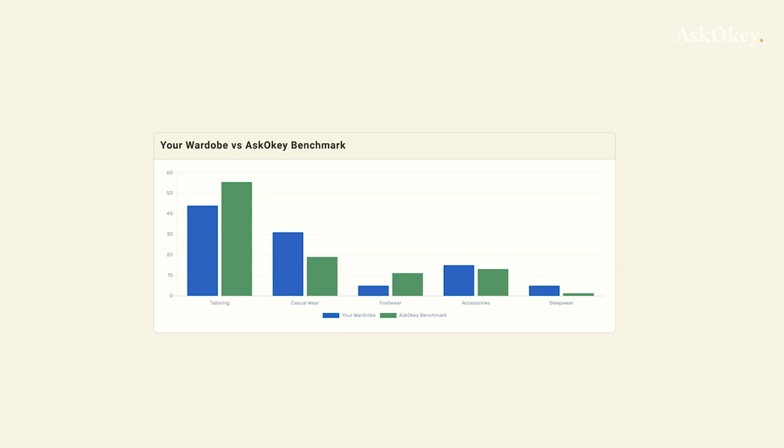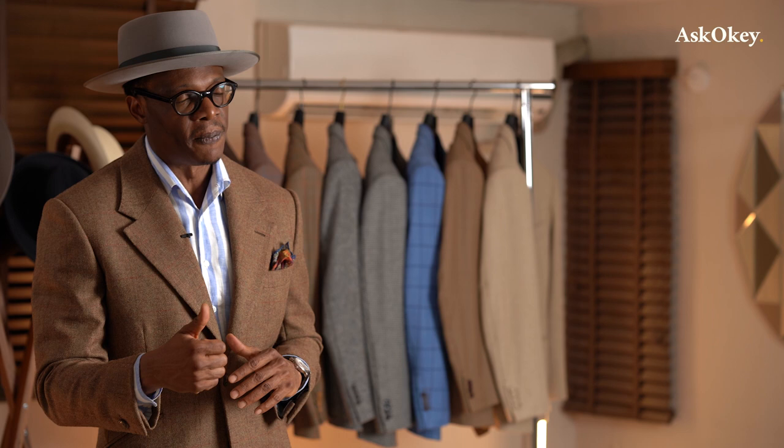For instance, for shoes or footwear I've allocated approximately 20%, for tailored clothing there's a certain percentage, for casual clothing a certain percentage, for accessories a certain percentage, and so on. As you build your own wardrobe and fill in those fields — once you're signed up on Ask Okie, which gives you access to Genie — there's a live comparison dashboard that shows how your allocation stacks up against the composite wardrobe.